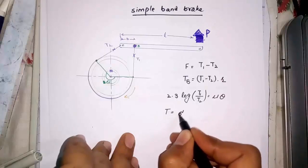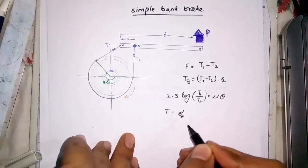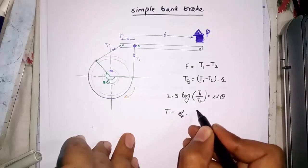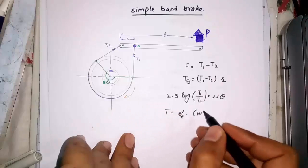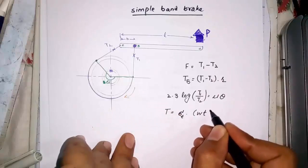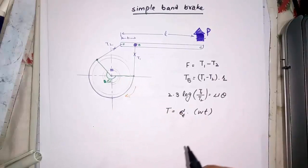Maximum tension can be found by this relation. Tmax or T1 is equal to tensile stress into area of band. W is width of band. T is thickness of band. Now, it's time to solve a problem.